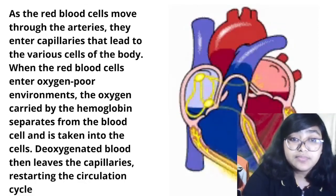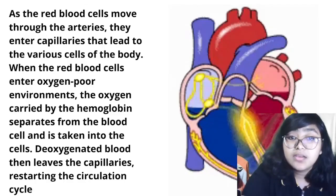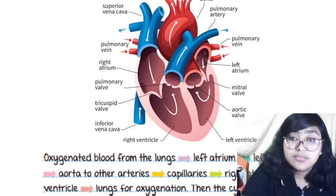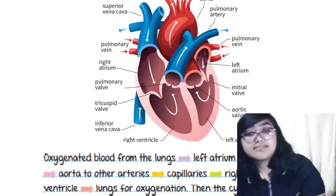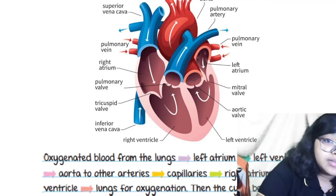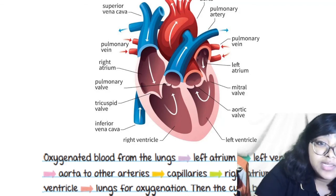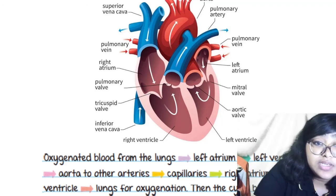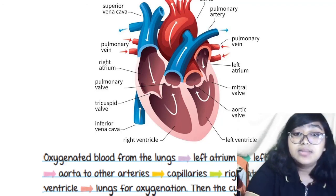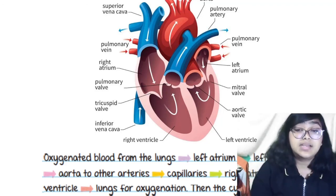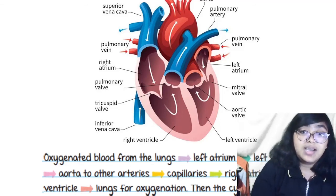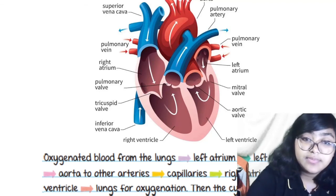To summarize, the whole procedure works like this: oxygenated blood from the lungs → left atrium → left ventricle → aorta → arteries → capillaries → body cells → right atrium → right ventricle → lungs for re-oxygenation, and the cycle continues. Thank you so much.